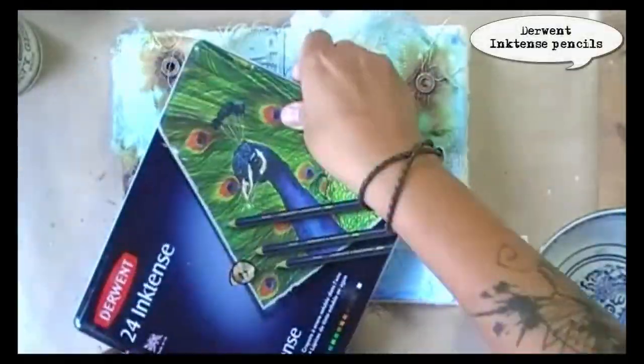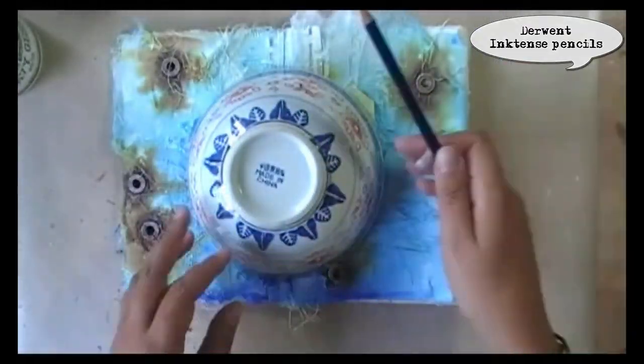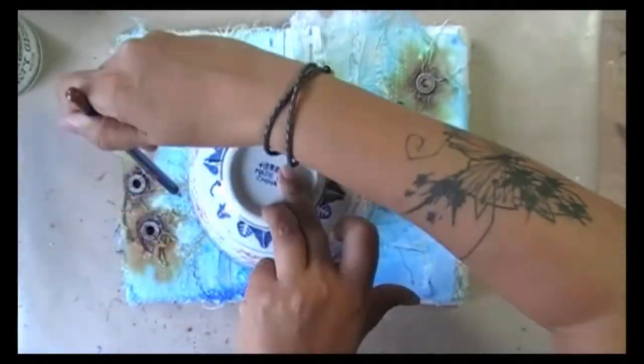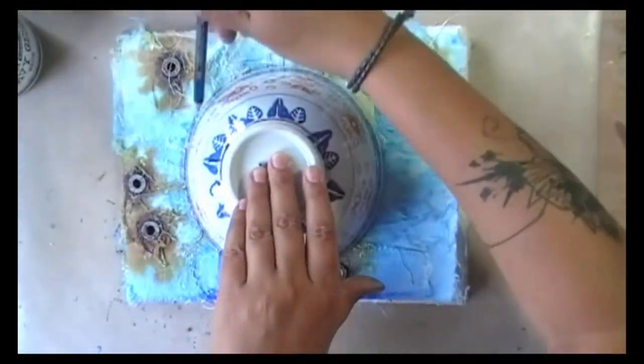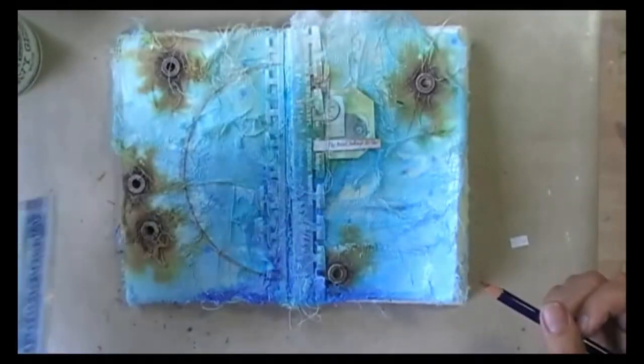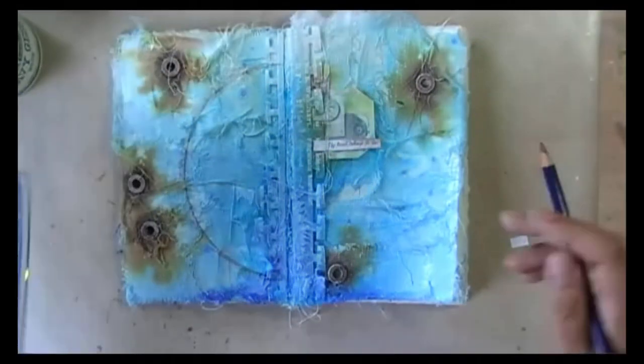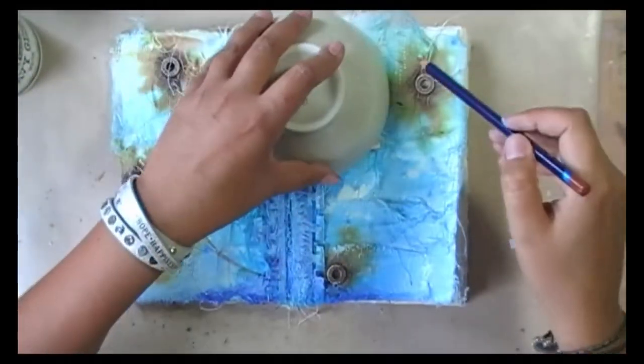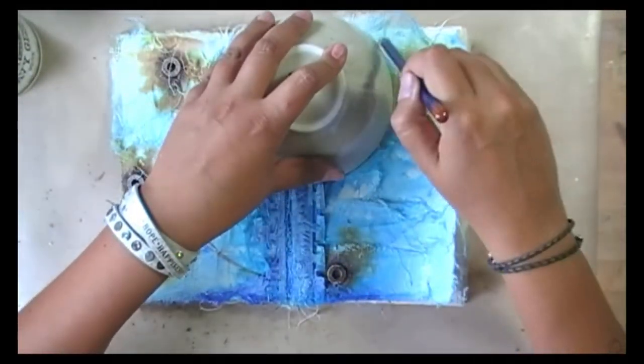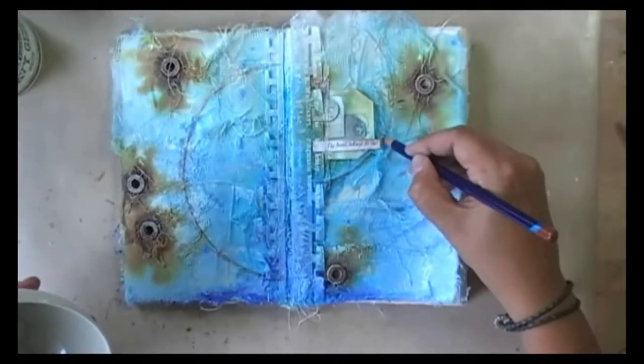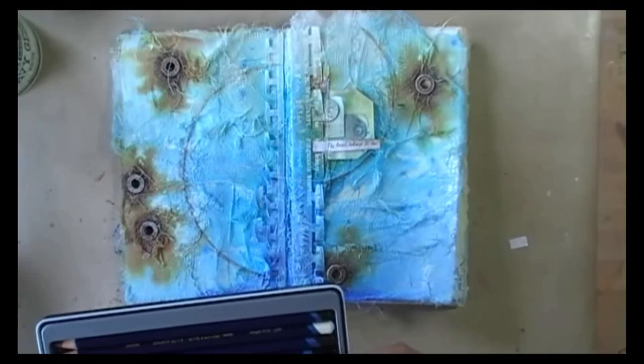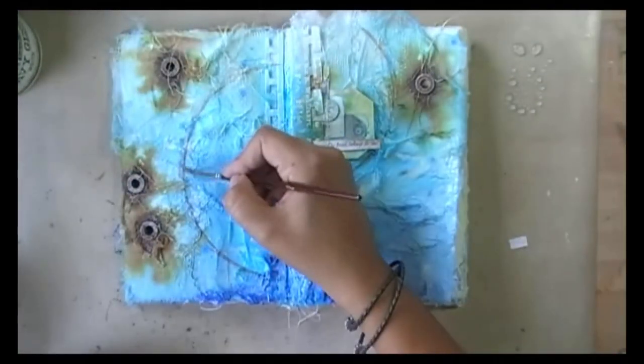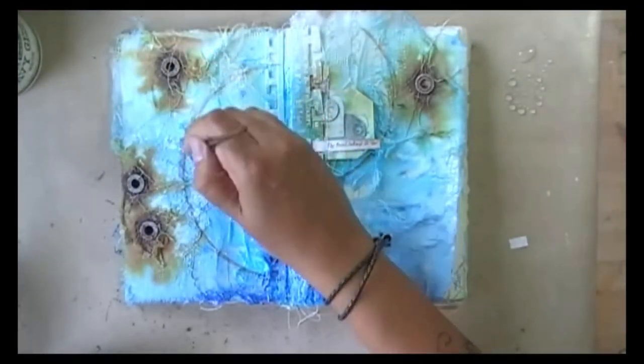And now I can go in with my pencils. So these are water-soluble pencils. And I'm using a bowl to create a circle. Well, half a circle. And I don't want the same size on both sides of my spread. So I'm using another bowl to create a second circle. And as those are water-soluble, I'm using some water to blend them in.